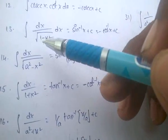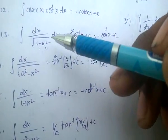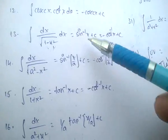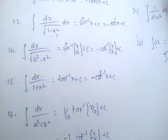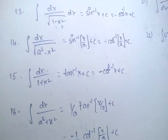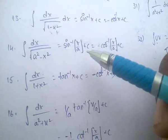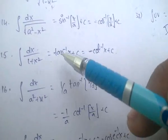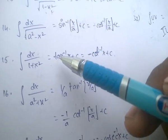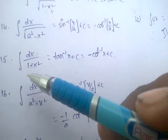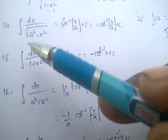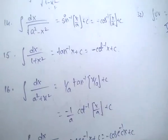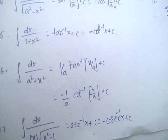Integral of 1 by root of (1 minus x²) dx equals sin inverse of x, or minus cos inverse of x. Integral of 1 by root of (a² minus x²) dx equals sin inverse of x/a plus c, or minus cos inverse of x/a plus c. Integral of 1 by (1 plus x²) dx equals tan inverse of x — just the reverse of differentiation.